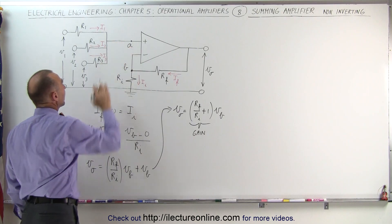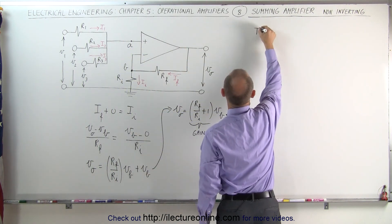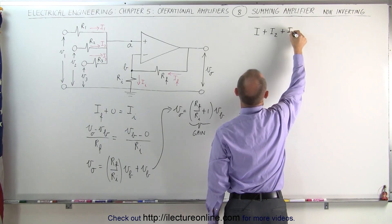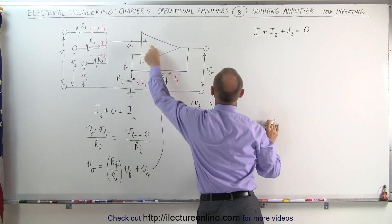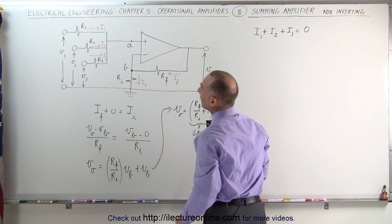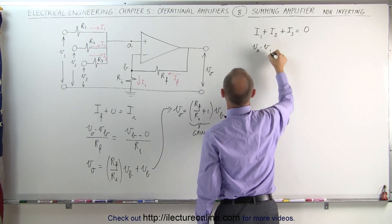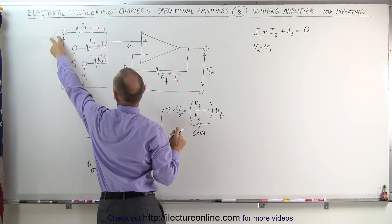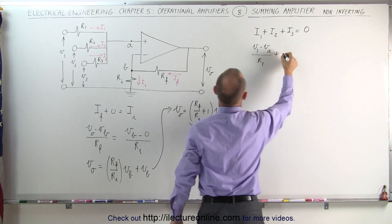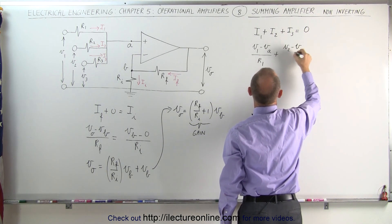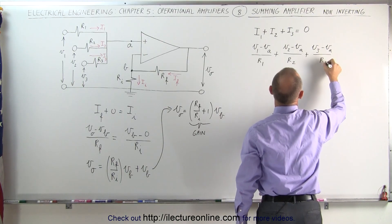Now we're going to take a look at terminal A right here. All the currents entering A must equal all the currents leaving A, which means that I1 plus I2 plus I3 must equal zero — we assume the current entering this terminal is nearly zero. I sub 1 can be found as V sub 1 minus V sub A divided by R sub 1, plus V sub 2 minus V sub A divided by R sub 2, plus V sub 3 minus V sub A divided by R sub 3, all equal to zero.